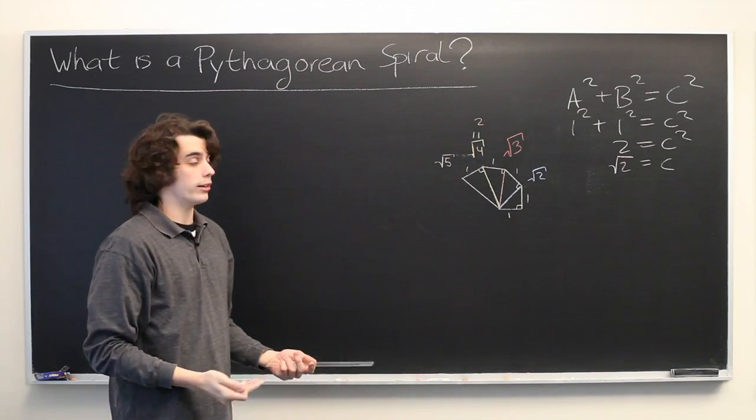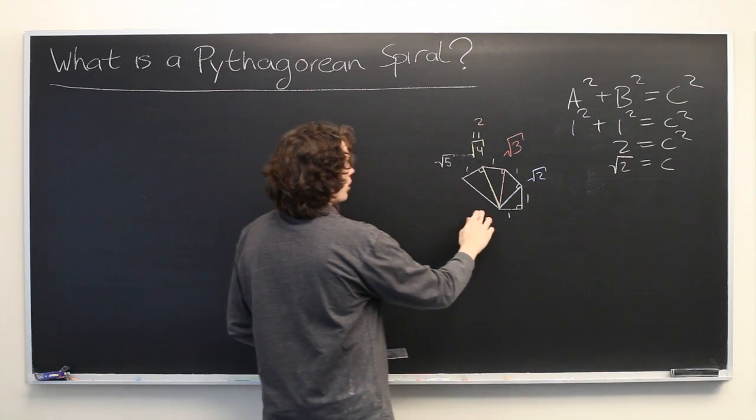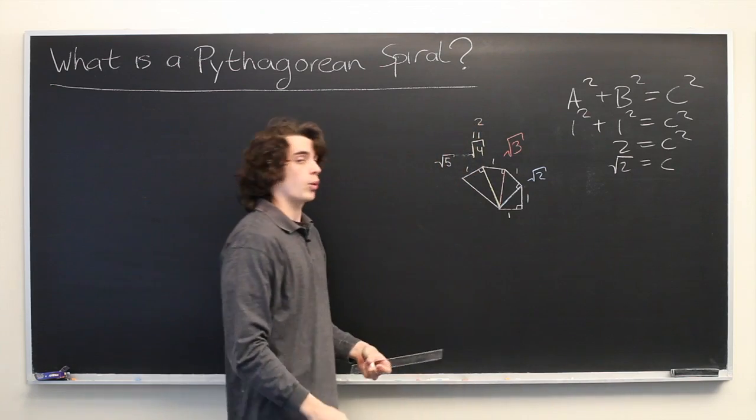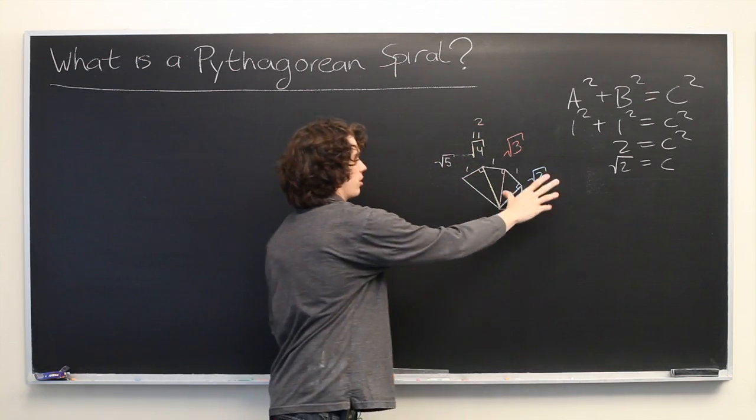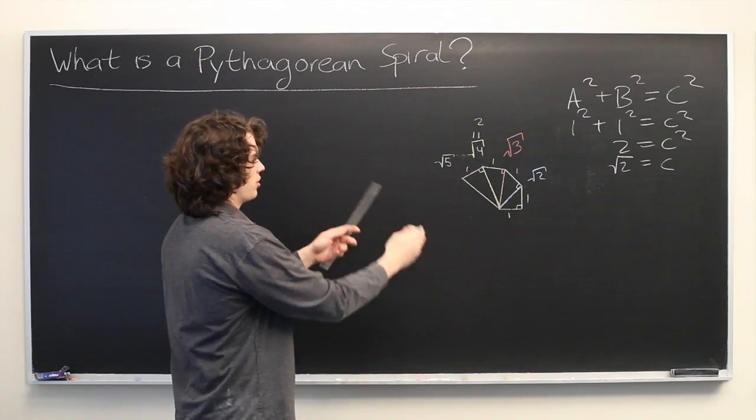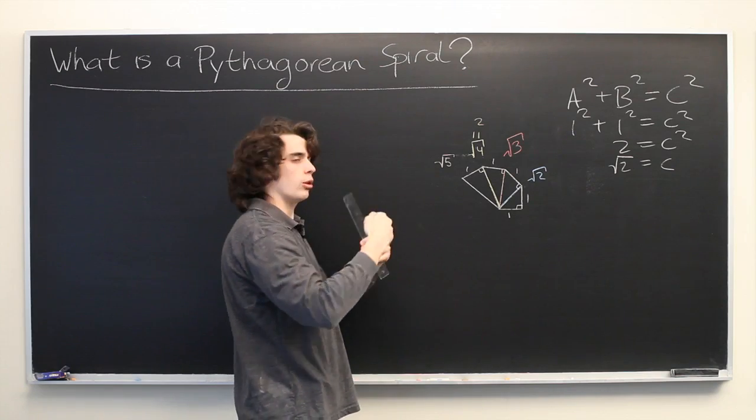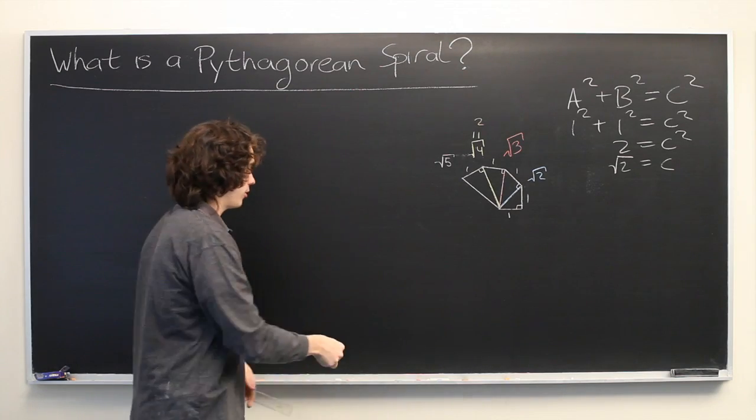If you've constructed it correctly, you should be able to get to a right triangle with hypotenuse length of square root of 17 before the triangles start to overlap. And you'll see that eventually it creates something that looks a bit like a conch shell. It's a rather interesting pattern.